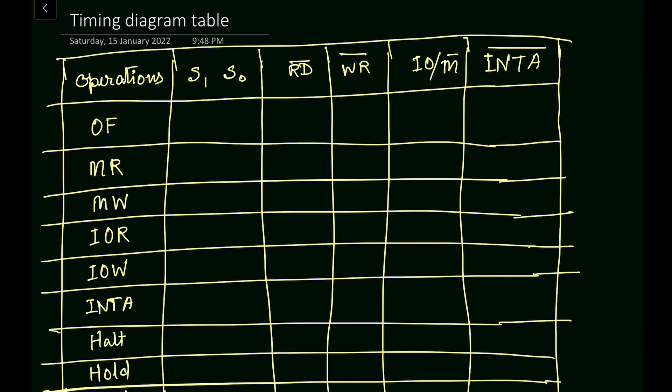Next we have RD bar — this is an active low signal. Active low means whenever the signal value is zero, the microprocessor will be performing the read operation. Similarly, WR bar is also an active low signal, so the microprocessor will perform the write operation when WR bar is equal to zero.